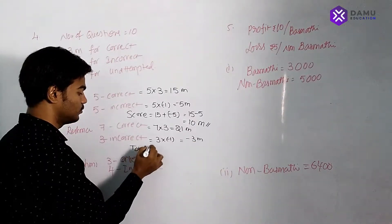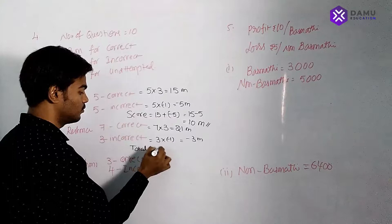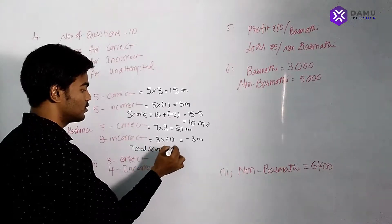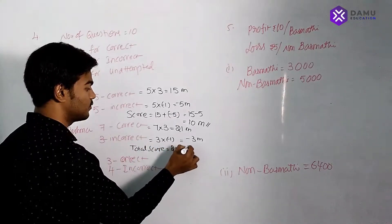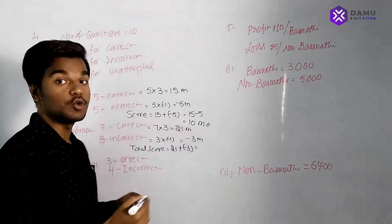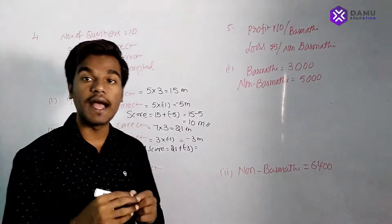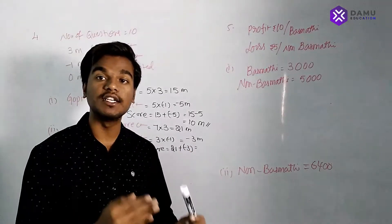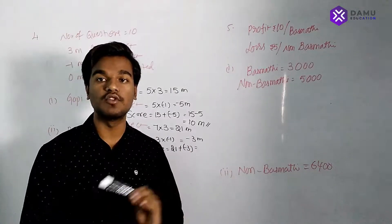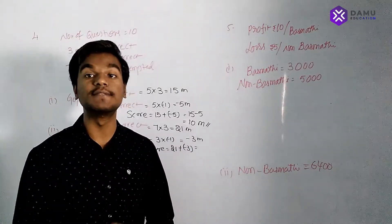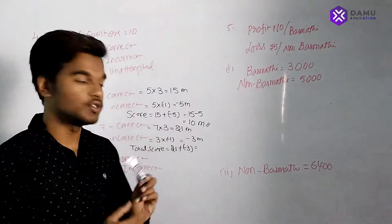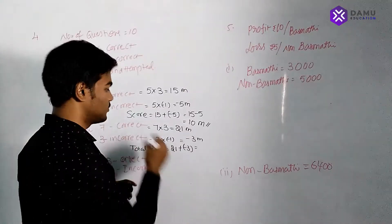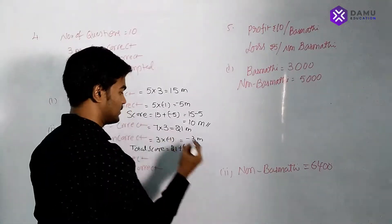Total score is 21 plus (minus 3). When it is reducing we take minus, so 21 minus 3 equals 18 marks.